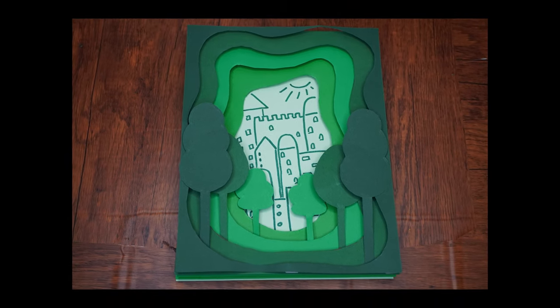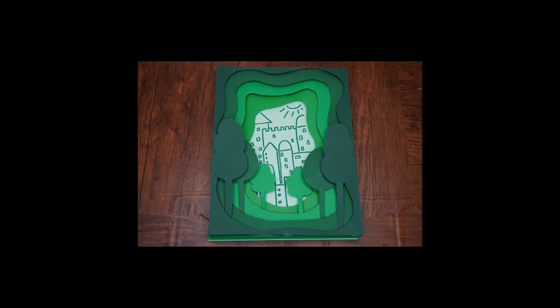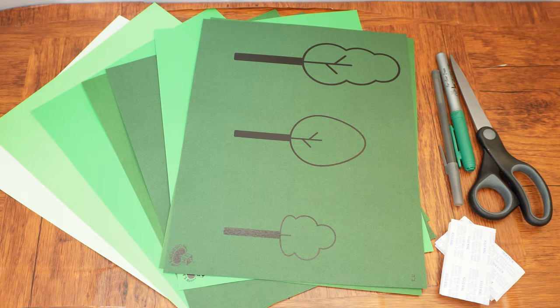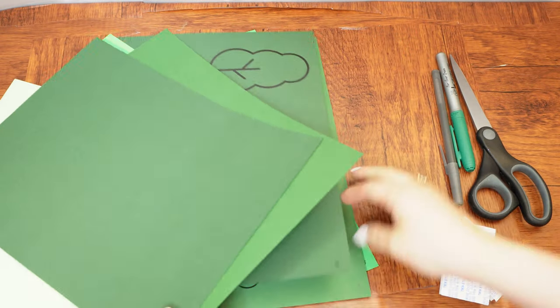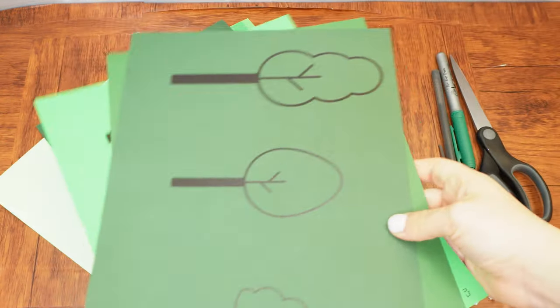Today we are going to make a cityscape surrounded by trees using a method called decoupage. Here are the supplies we will need: five sheets of green cardstock in five different shades, the tree template printed on varying shades of green cardstock, scissors,